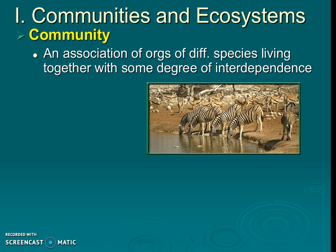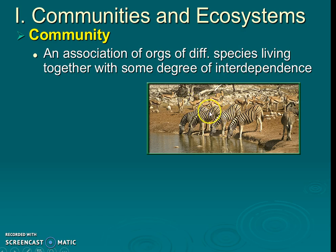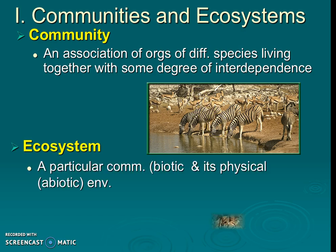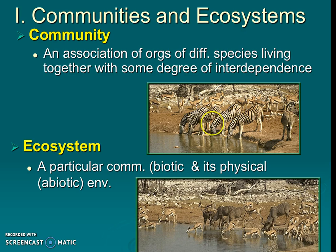Communities are a group of organisms of different species all working together. They don't actually have to be interacting too much, but they're in an area together. An ecosystem, on the other hand, is not just the biotic — it is also the physical abiotic environment.